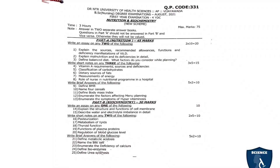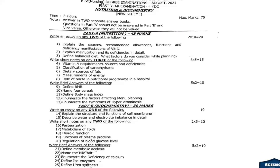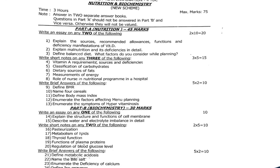The Nutrition and Biochemistry question paper was taken from Dr. NTR University of Health Sciences, August 2021. The question paper code is 331. Under this paper, Part A is Nutrition for 45 marks and Part B is Biochemistry for 30 marks.